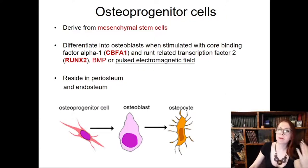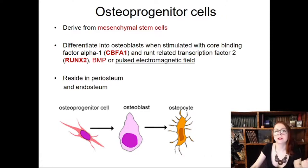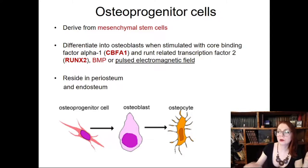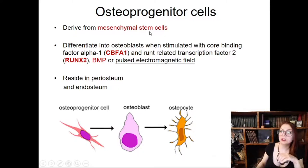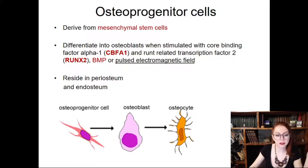The most immature cells at the beginning of bone formation are osteoprogenitor cells, derived from mesenchymal stem or stromal cells. These cells can be easily obtained from abdominal fat — for example, fat removed during plastic surgery. Those cells can be transdifferentiated into bone cells or cartilage cells, making mesenchymal stem cells a very promising source for regenerative medicine.